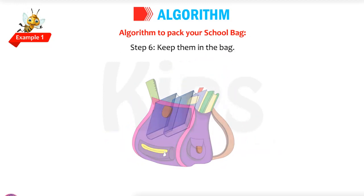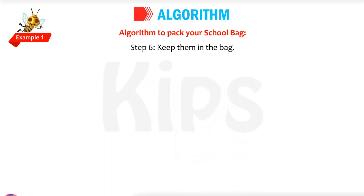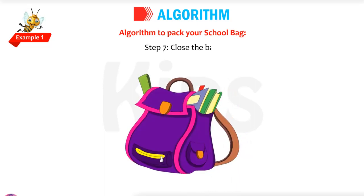Step six: keep them in the bag. After that, the last step: close the bag. So these are the steps — open the bag, take the diary, see the timetable, take books from the shelf, keep the textbooks and notebooks in the bag, and close the bag. This is a simple algorithm to pack your school bag. The output is: your bag is packed.